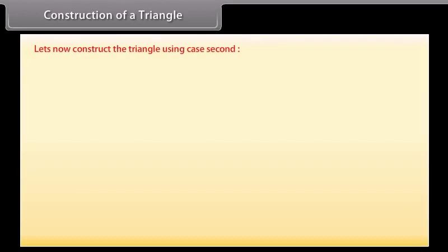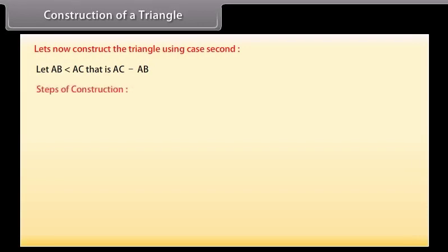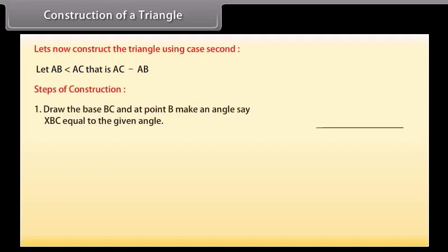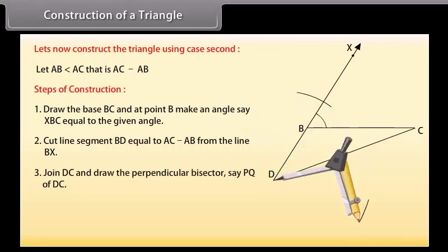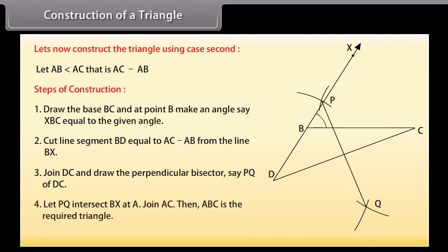Case 2: AB is less than AC, that is AC minus AB is given. Steps of construction: Draw base BC and at point B make angle XBC equal to the given angle. Cut line segment BD equal to AC minus AB from line BX. Join DC and draw the perpendicular bisector PQ of DC. Let PQ intersect BX at A. Join AC. Then ABC is the required triangle.